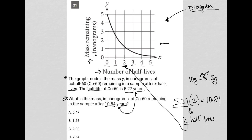That 2 on the x-axis corresponds with this point here on the graph, which is a bit above one nanogram of cobalt-60 remaining, slightly above one.